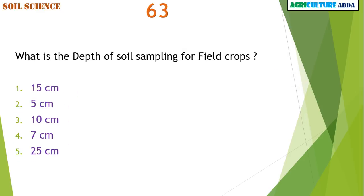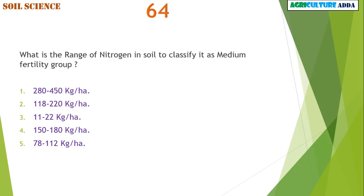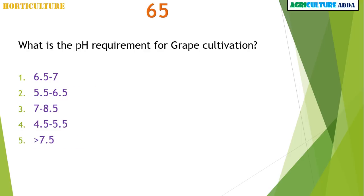What is the depth of soil sampling for field crops? 15 cm. What is the range of nitrogen in soil to classify it as medium fertility group? 280 to 450 kg per hectare. What is the pH requirement for grape cultivation? 6.5 to 7.